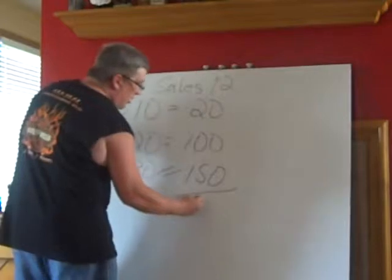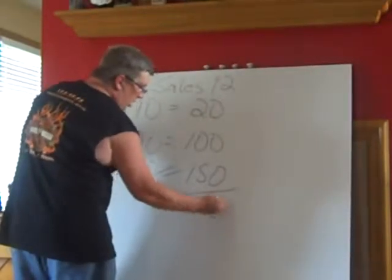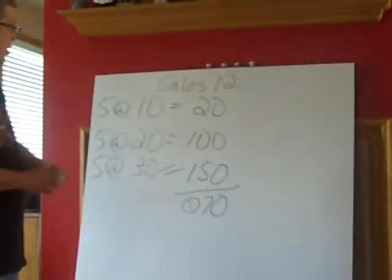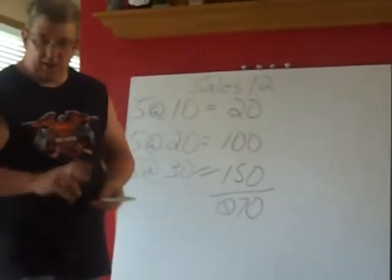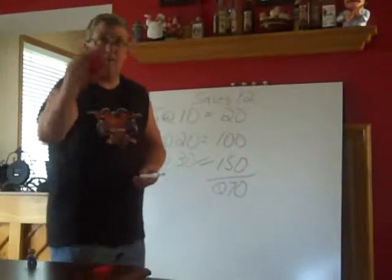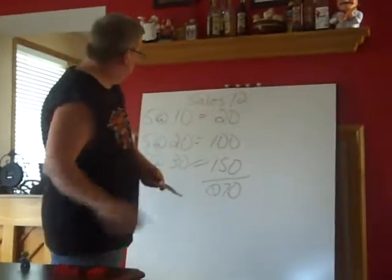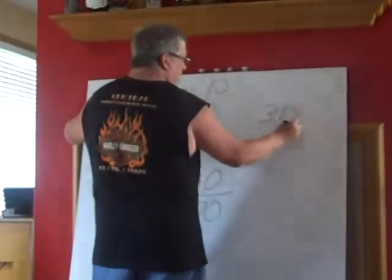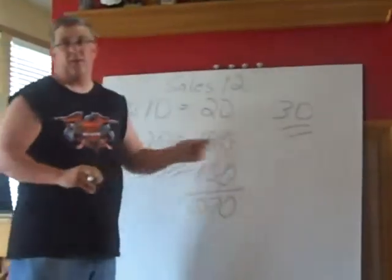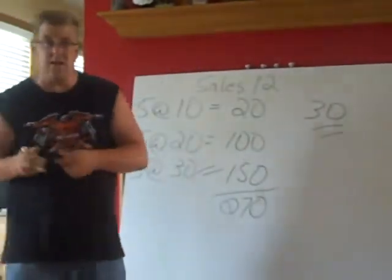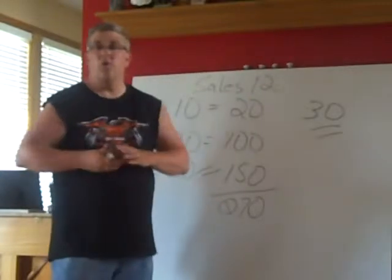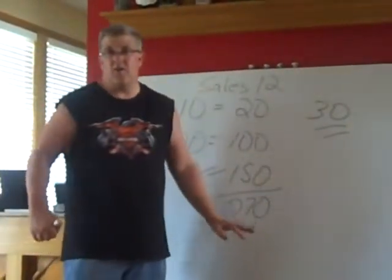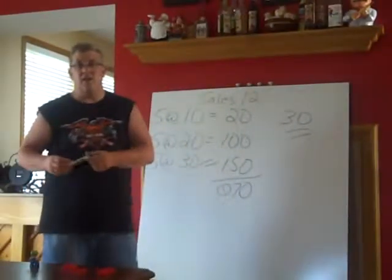Our total cost of goods sold is $270. Our ending inventory will be our three blocks at $10 apiece — three at $10 — so our ending inventory is $30. That $30 goes on the balance sheet, and the cost of goods sold of $270 goes on the income statement.